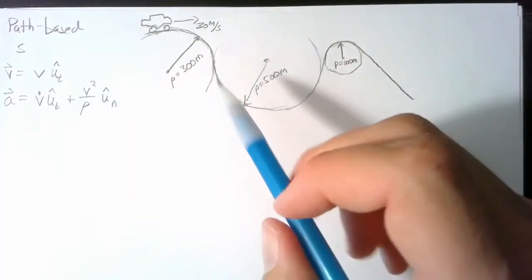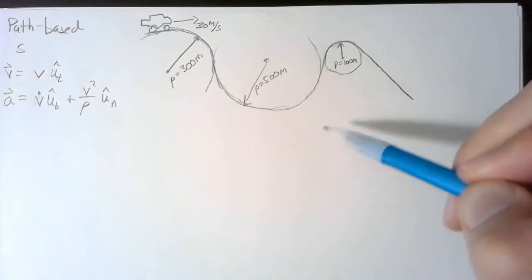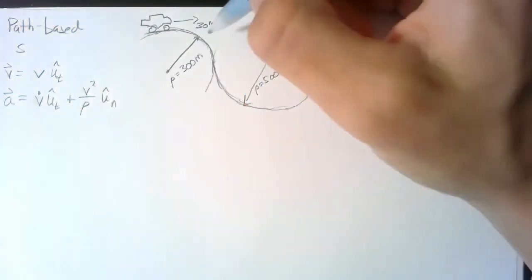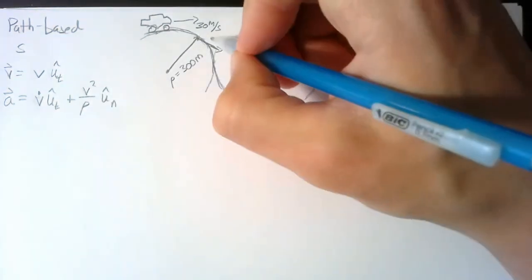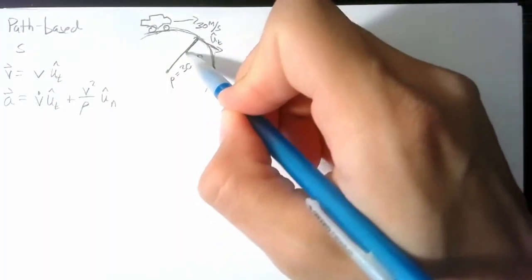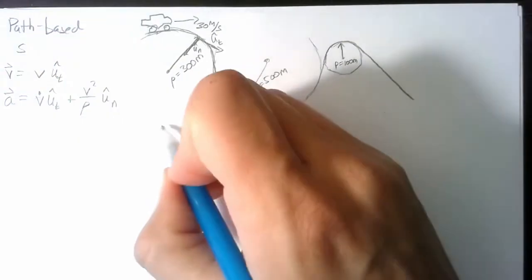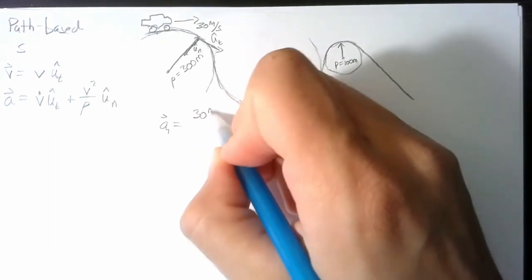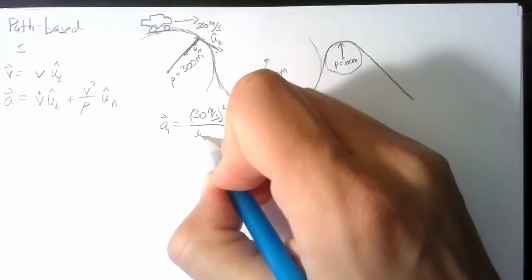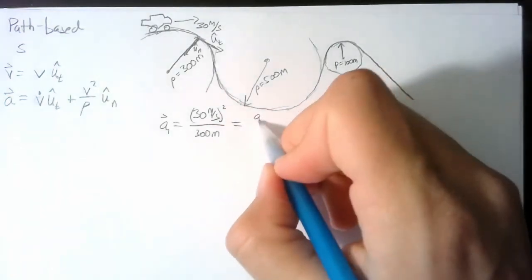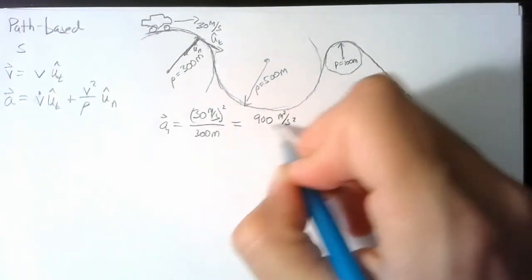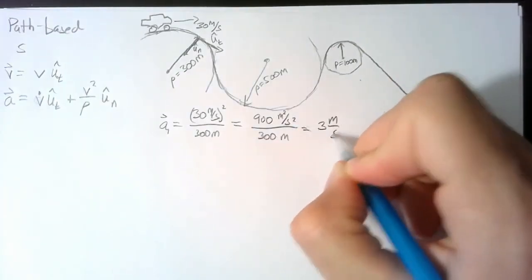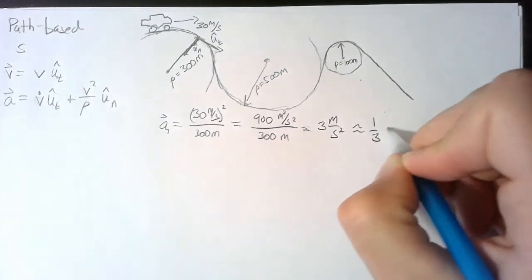Since velocity is constant, there's no tangential acceleration — all acceleration is centripetal, directed inward. For turn 1: a = v²/ρ = 30² / 300 = 900 / 300 = 3 meters per second squared, which is about one-third of Earth's gravity.